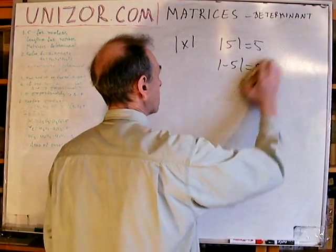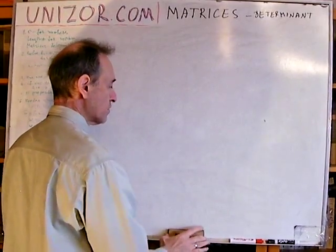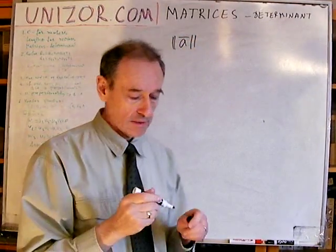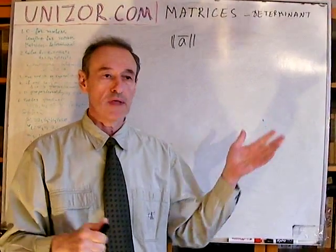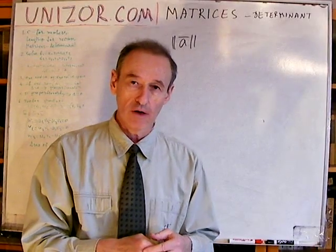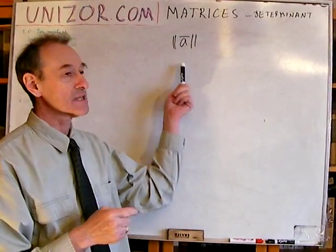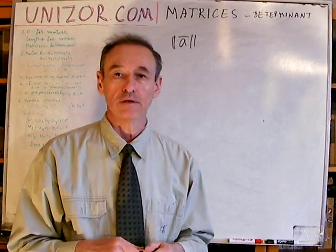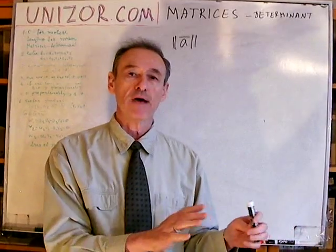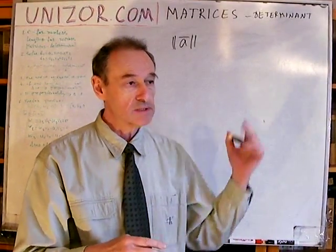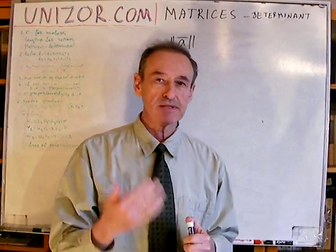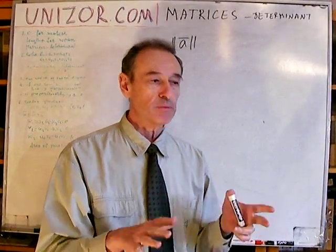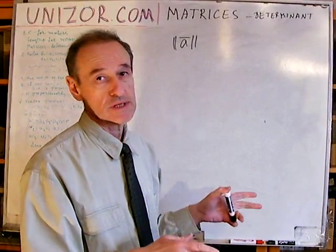With vectors, we have something similar — the length of a vector. If the length is zero, adding it to any other vector won't change that vector. And if you scale the zero vector by any factor, it remains the zero vector, unlike any other vector which would change with scaling. So this is a specific property that differentiates the zero vector from all others. A similar property exists among square matrices, and it's called the determinant.